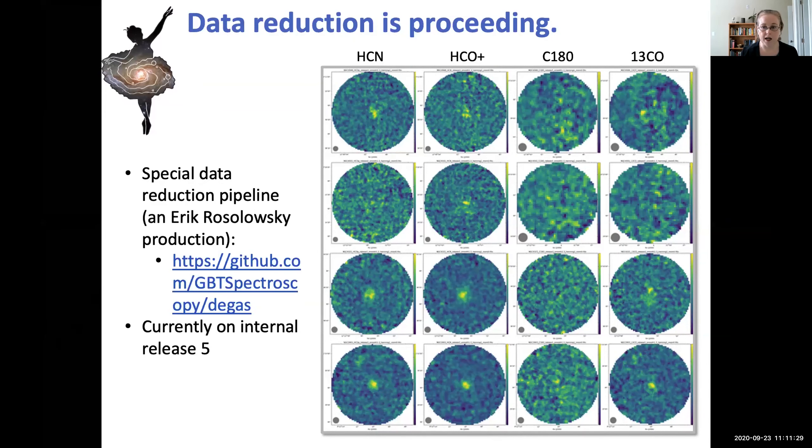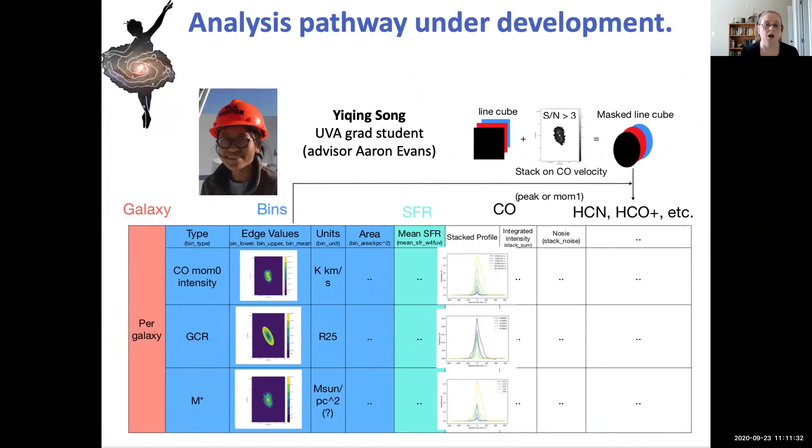So parallel to all this data reduction, I've been fortunate to work with a grad student at UVA, Yuching Song. Her advisor is Erin Evans, but she's doing a side project with me to develop the analysis pathway for this survey.